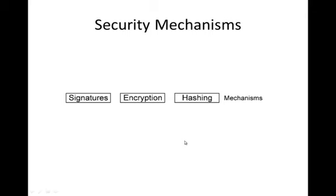The digital signature is the inverse of encryption. With asymmetric encryption, you encrypt using the public key and decrypt using the private key. With a signature, you encrypt using your private key and decrypt using the public key. We'll understand signatures more clearly when we look at the diagram.